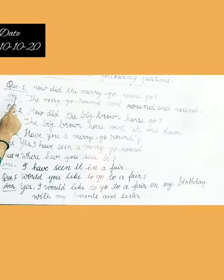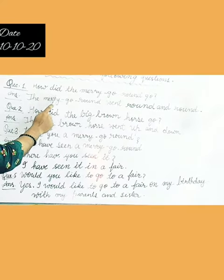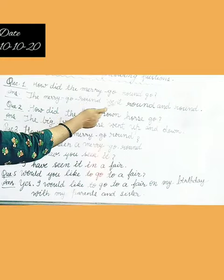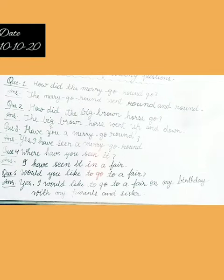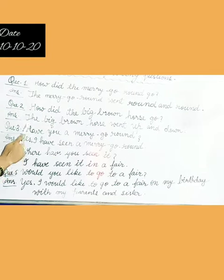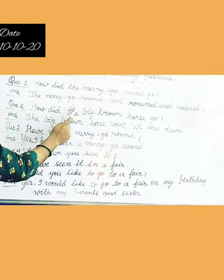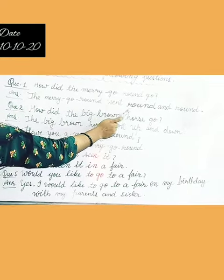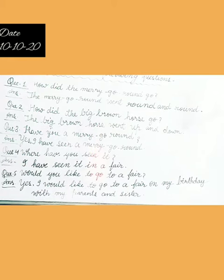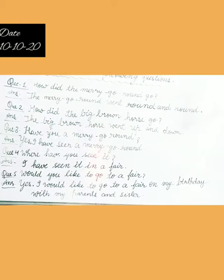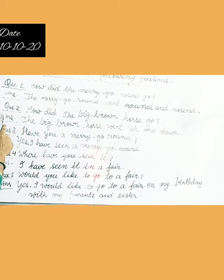Question number 1 is: how did the Merry-Go-Round go? The answer is: the Merry-Go-Round went round and round. Merry-Go-Round kaise chata da? Round and round.